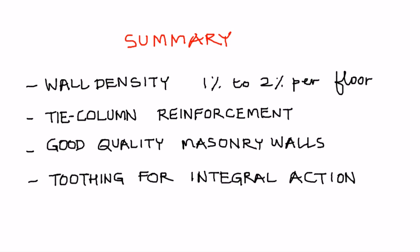To summarize: it is very important for a confined masonry building to achieve wall density of 1% to 2% per floor. It is very important to have proper reinforcement and detailing of tie columns — particularly ties in terms of their spacing and anchorage. Good quality of masonry walls is essential for satisfactory performance of any masonry construction including confined masonry. And toothing at the wall to tie column interface is critical for ensuring bonding between those two components.